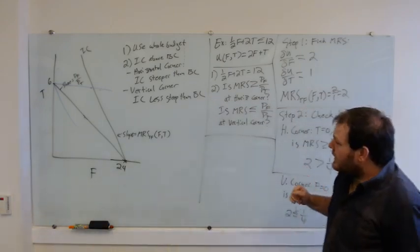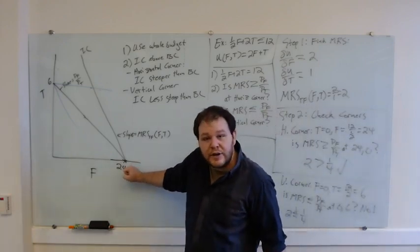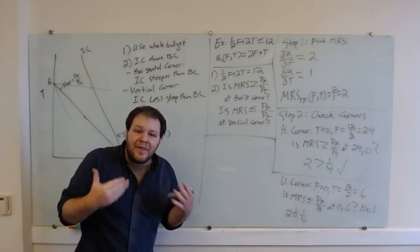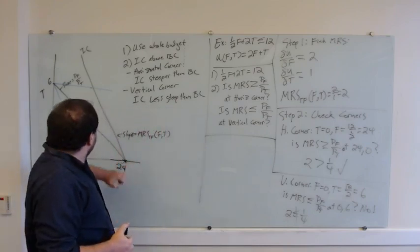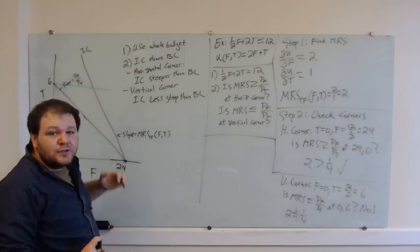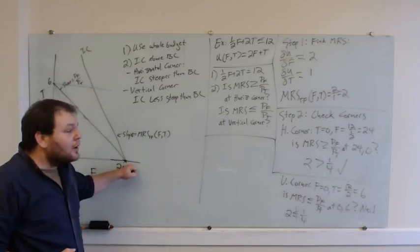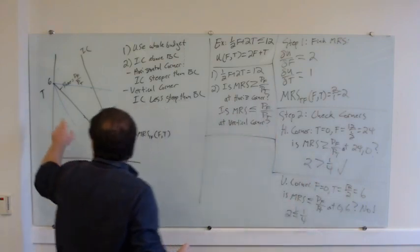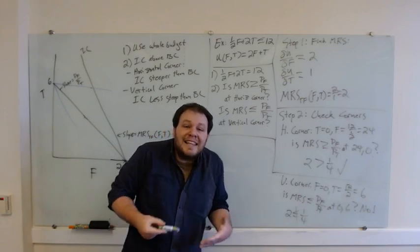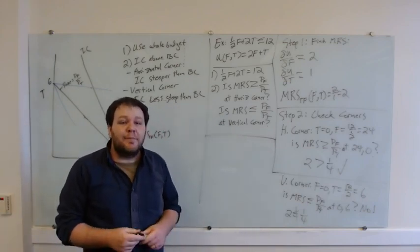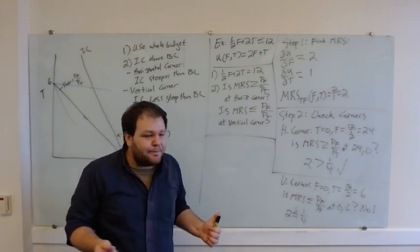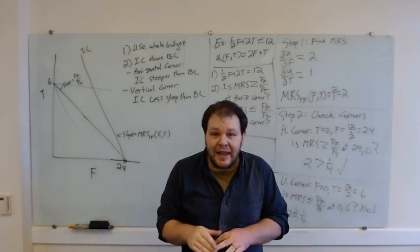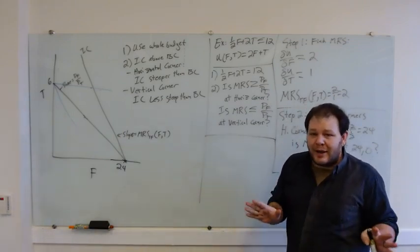To summarize: identify your corners using the budget constraint with equality, then check whether your indifference curve lies above the budget constraint. For a horizontal corner, the indifference curve must be at least as steep as the budget constraint. For a vertical corner, the indifference curve must be no steeper than the budget constraint. That's how you solve for corner solutions. Thank you, and please let me know if you have any questions.